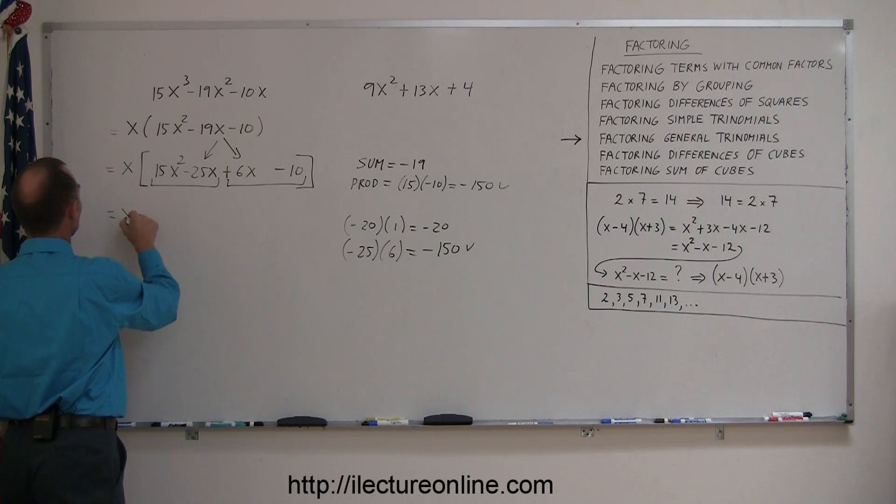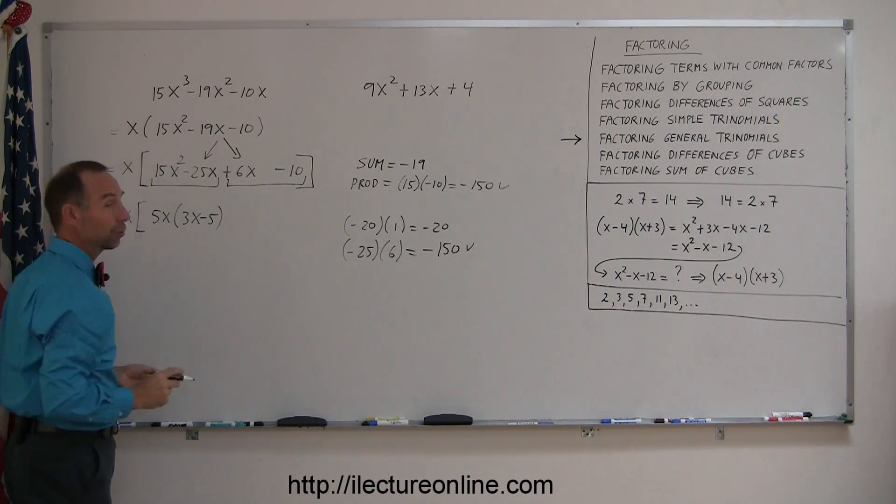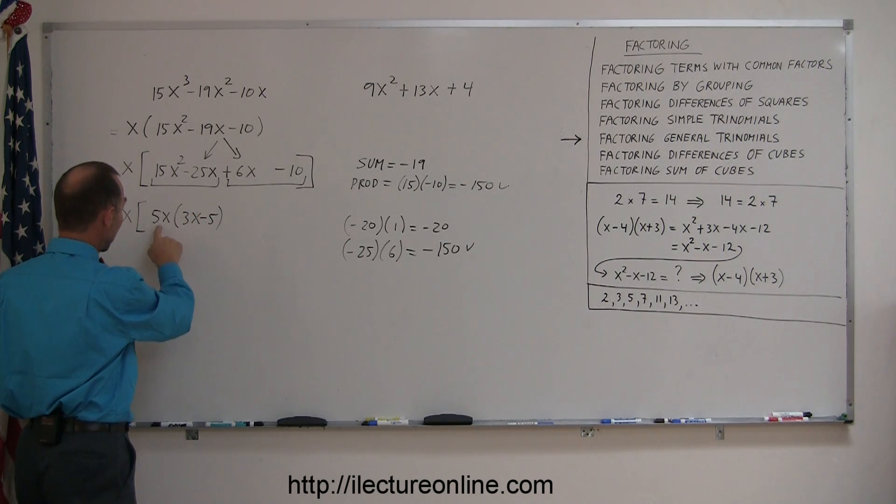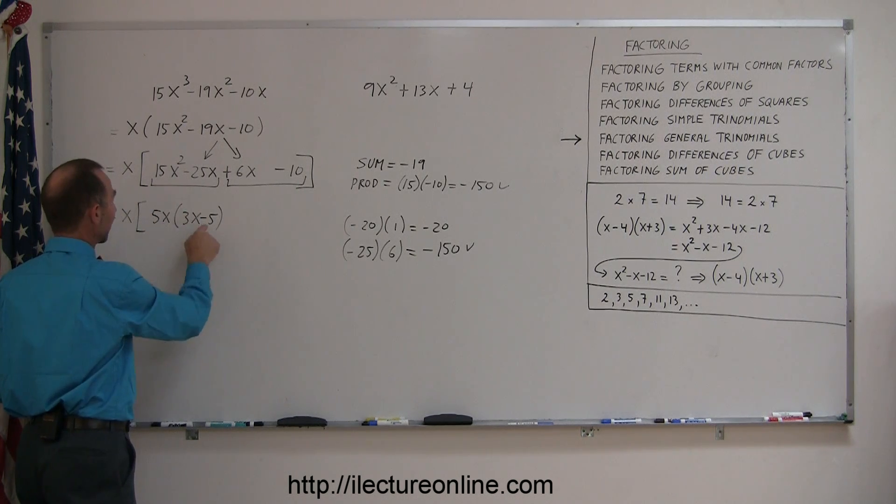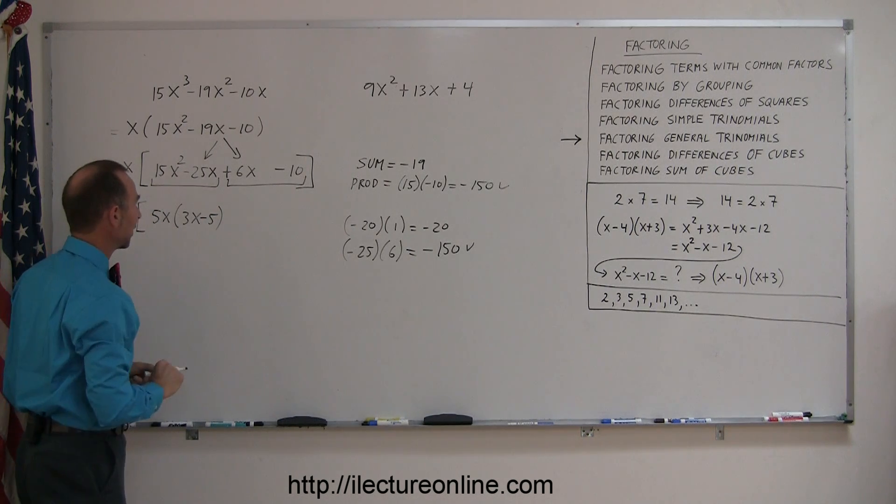I factor out a common factor out of each group. So the first group, the common factor is 5x and I'm left with 3x minus 5. Again, if you want to make sure you did it correctly, you multiply back in. 5x times 3x gives you 15x squared. 5x times the minus 5 gives you minus 25x.